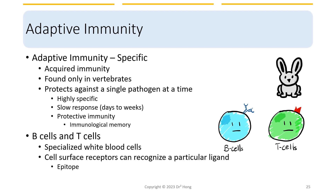In terms of the cellular components of adaptive immunity, in a broad sense we can call them B cells and T cells. They are specialized white blood cells with surface receptors that can recognize a particular ligand or antigen. The specific parts of an antigen that are recognized are called epitopes. We'll have much more detail on the adaptive immunity in later lectures.